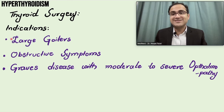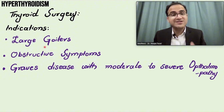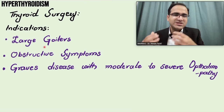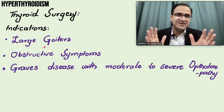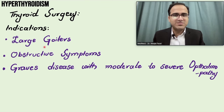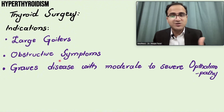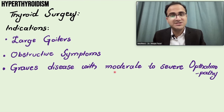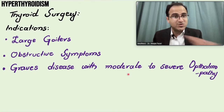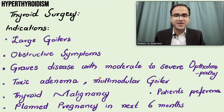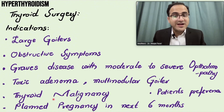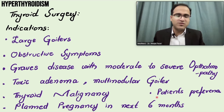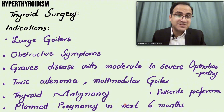Indications for thyroid surgery include large goiters causing dysphagia, hoarseness, or compressive symptoms. Graves' disease with moderate to severe ophthalmopathy unresponsive to treatment is also an indication for surgery. Radioiodine ablation is contraindicated in patients with severe ophthalmopathy. Toxic adenoma, multinodular goiter, thyroid malignancy, patient preference for surgery, and planned pregnancy within the next six months are further surgical indications.